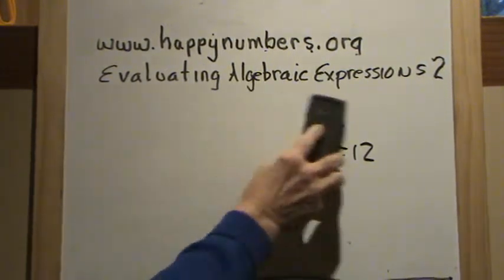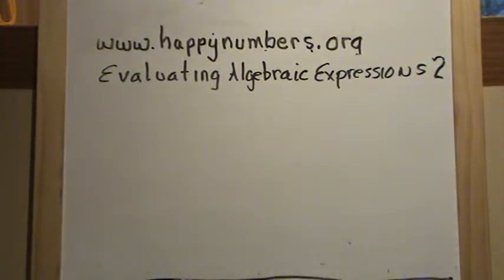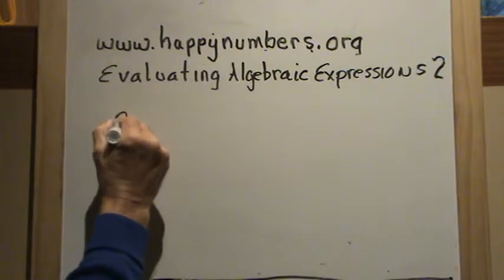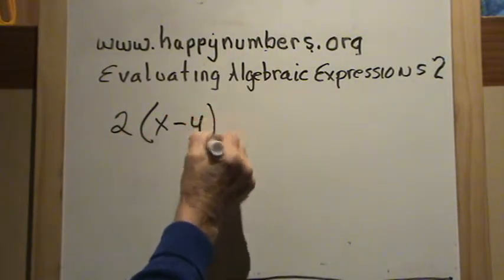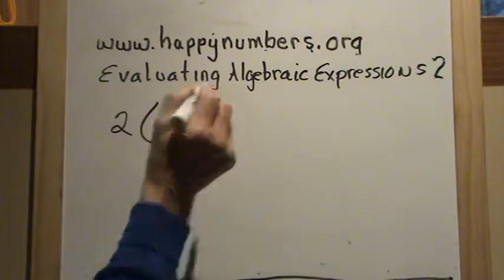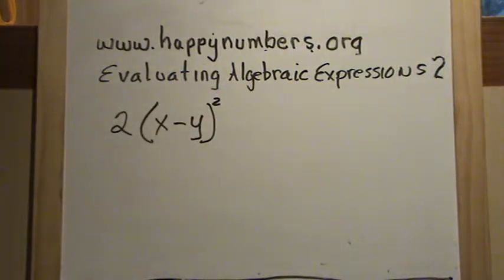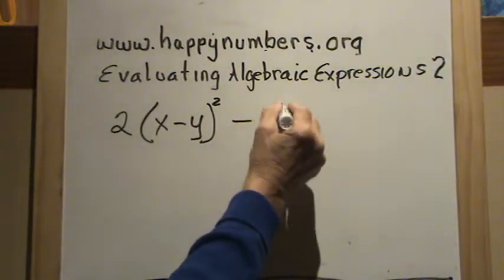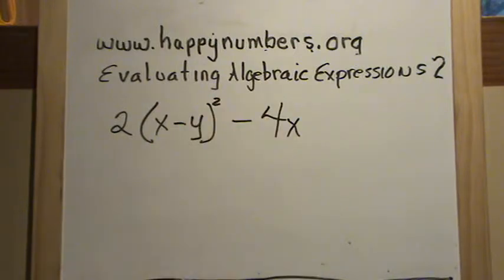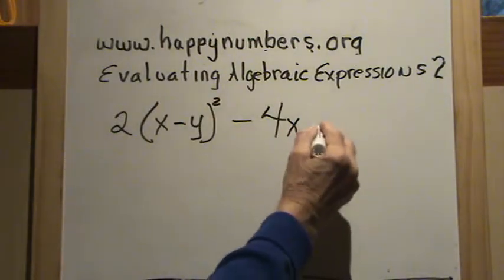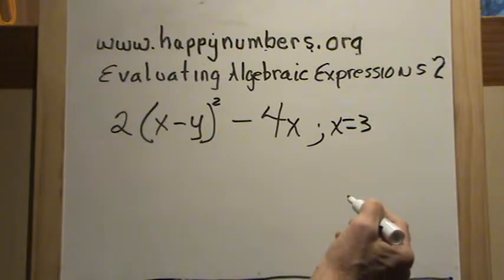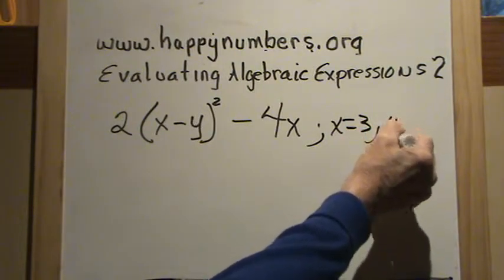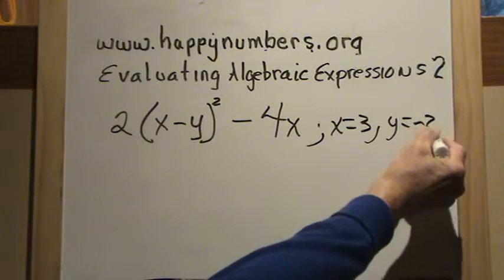Let's take a look at one that's a little more involved. Let's try: 2 times the quantity x minus y, squared, minus 4 times x. They tell us x equals 3 and y equals negative 2.